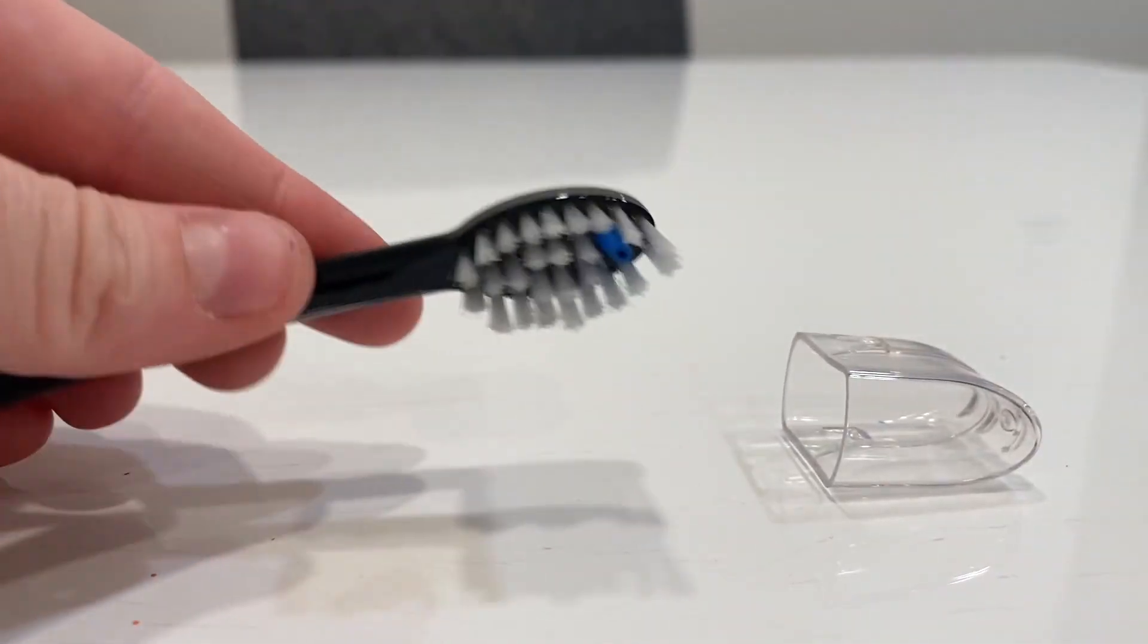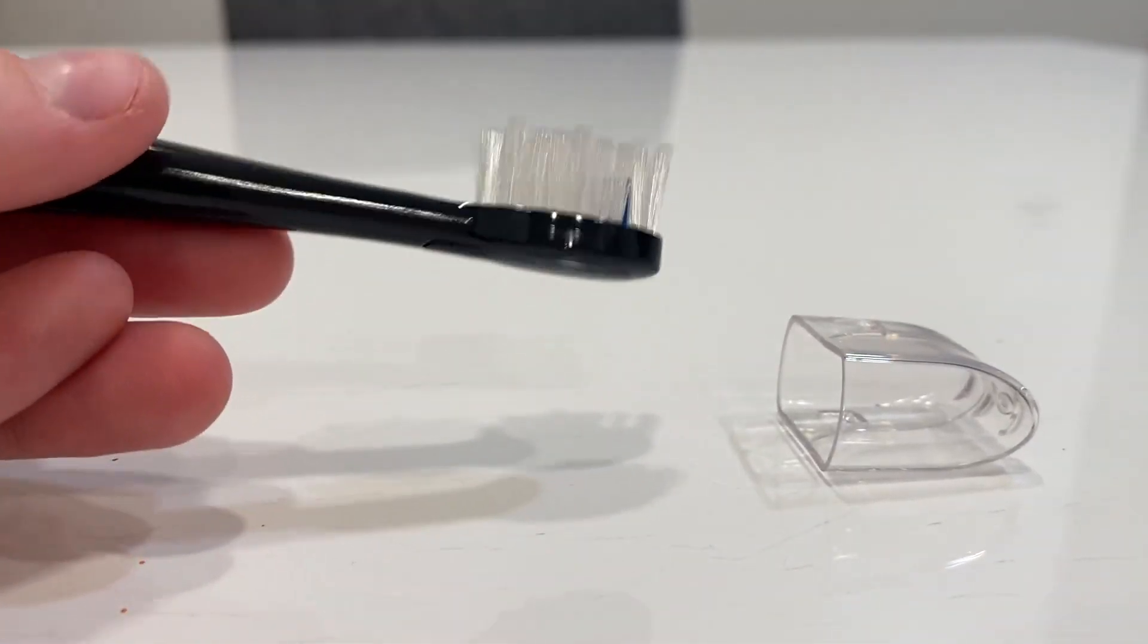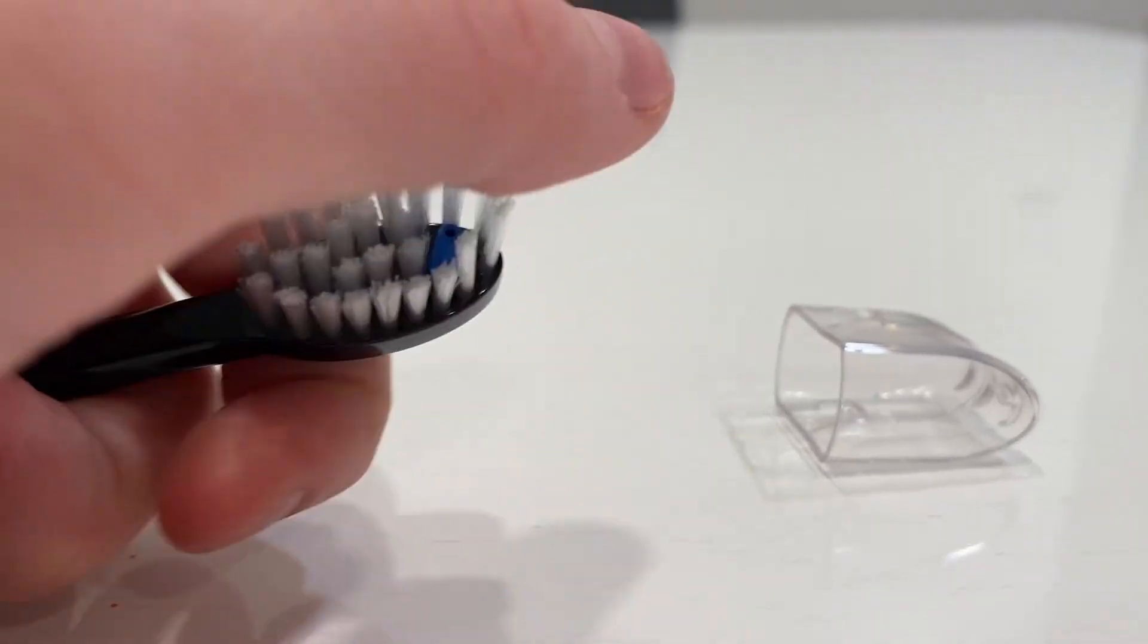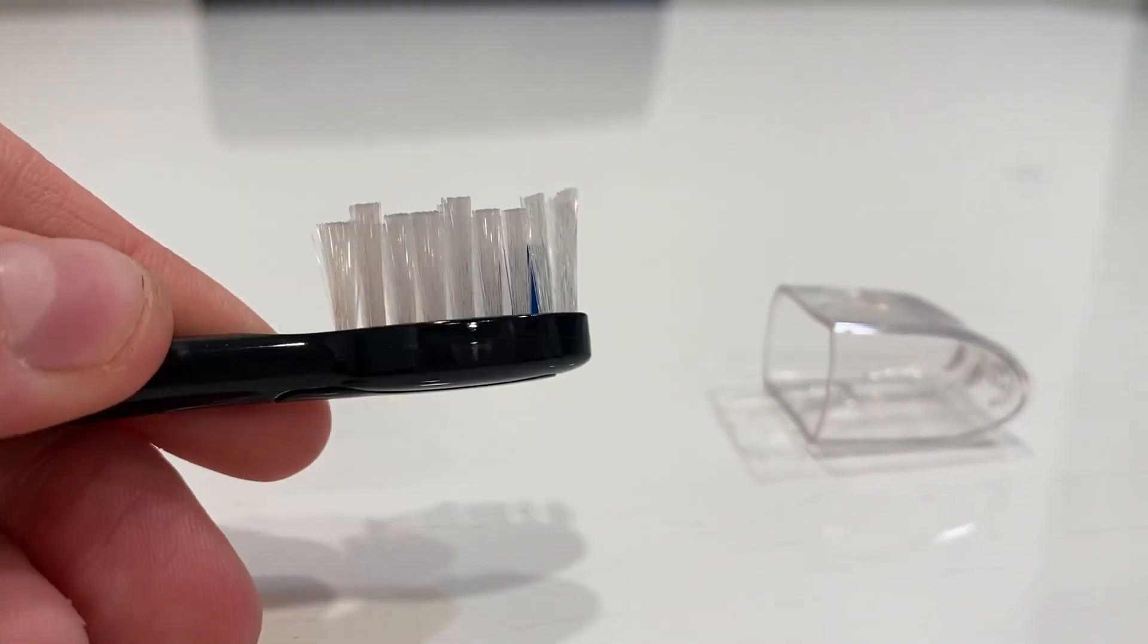So this is what the bristles look like on this. They're soft, but they're not too soft that it won't be efficient. So I'll just show you. This is what it looks like. There's a good amount of bristles on this.